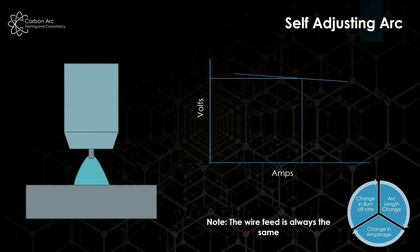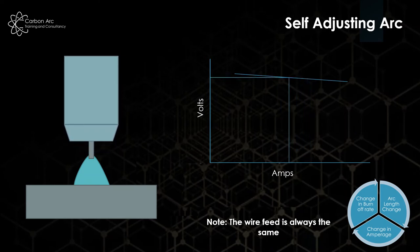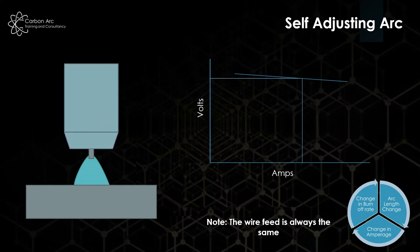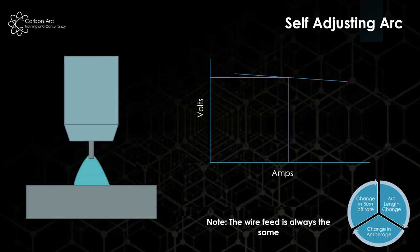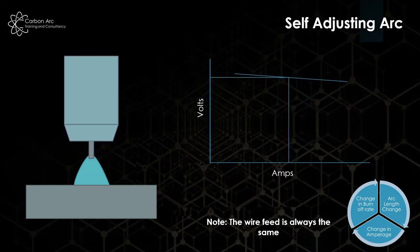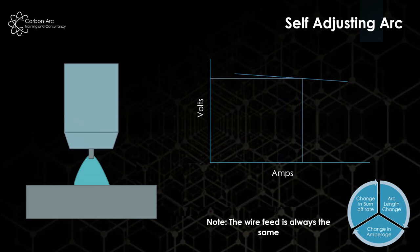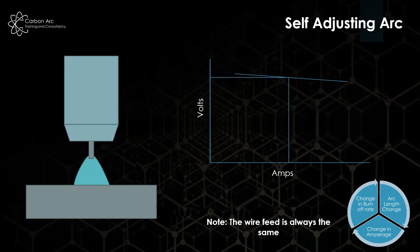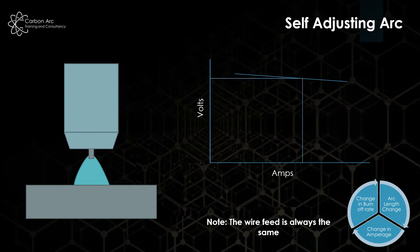And vice versa, if I pull the torch away, voltage goes up, amperage goes down, burn-off rate goes down. And that wire can then move through the arc more before it burns off. And again, that's constantly feeding back on itself, which means that those very small changes keep the arc pretty much the same length all of the time.